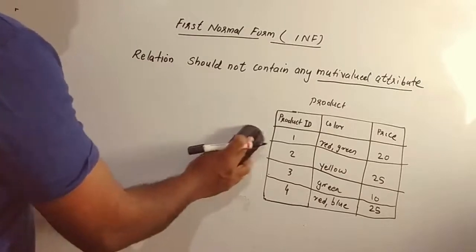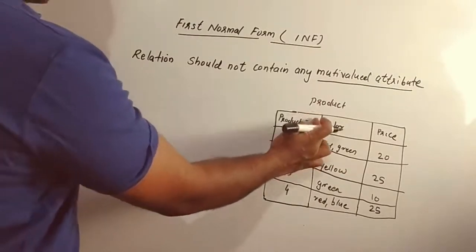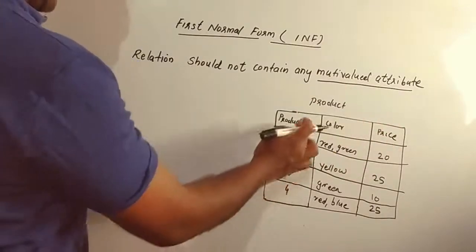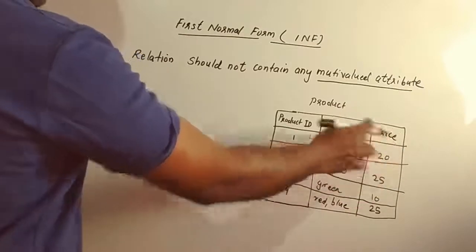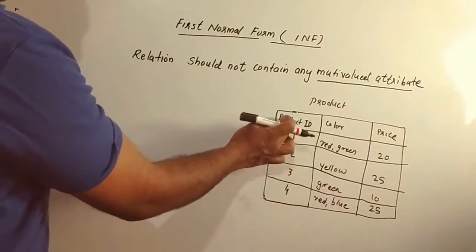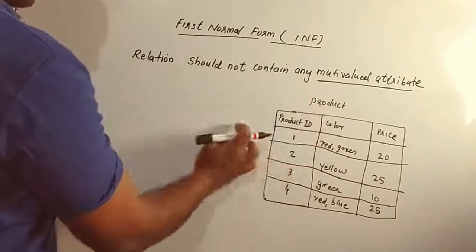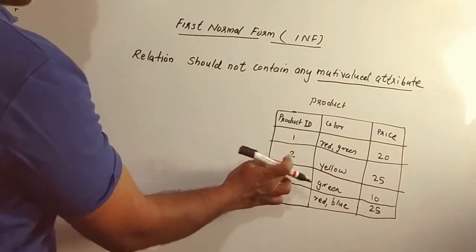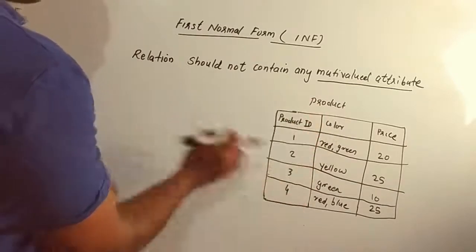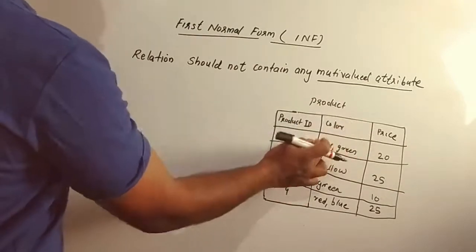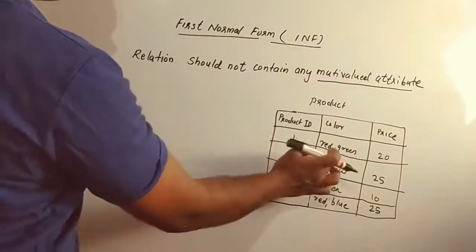We will examine this relation. Product is called product. In this relation: product ID, color, and price. Product ID has a group of colors and price. If the color is at the same point, the color intersects the same point.